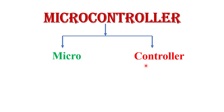We can say that a microcontroller is a microprocessor with integrated peripherals. A microcontroller has CPU, ROM, RAM, timer, counter, oscillator circuit, analog-to-digital converter, digital-to-analog converter, serial ports, input/output ports, and interrupt logic — all functional blocks on a single chip, which makes it a complete system.